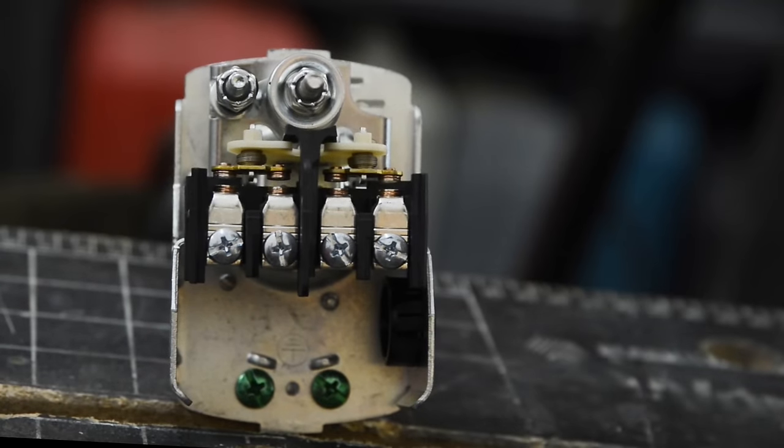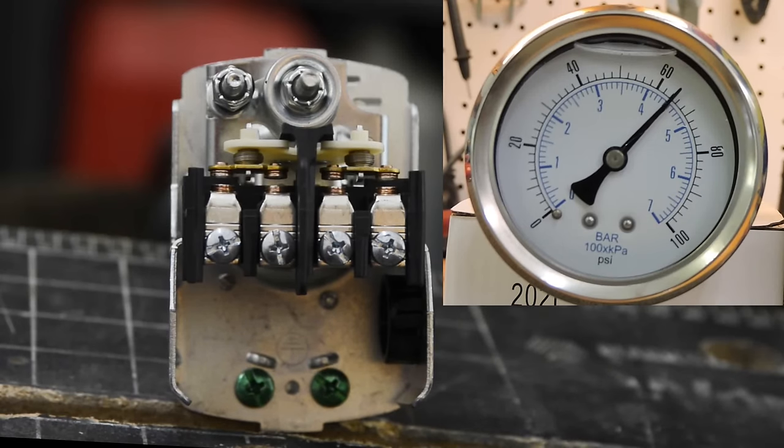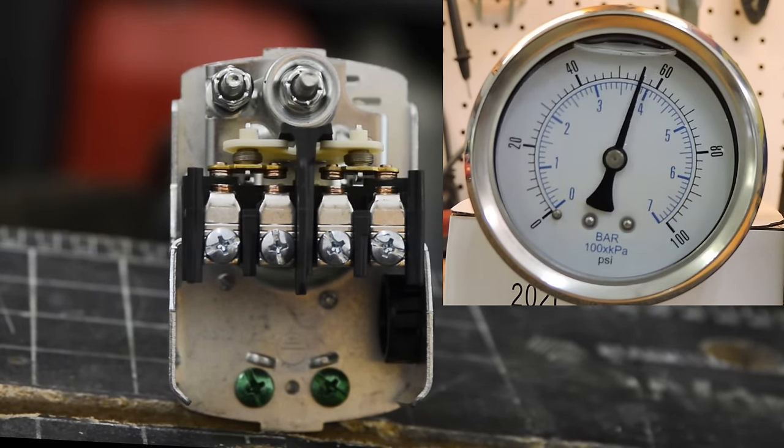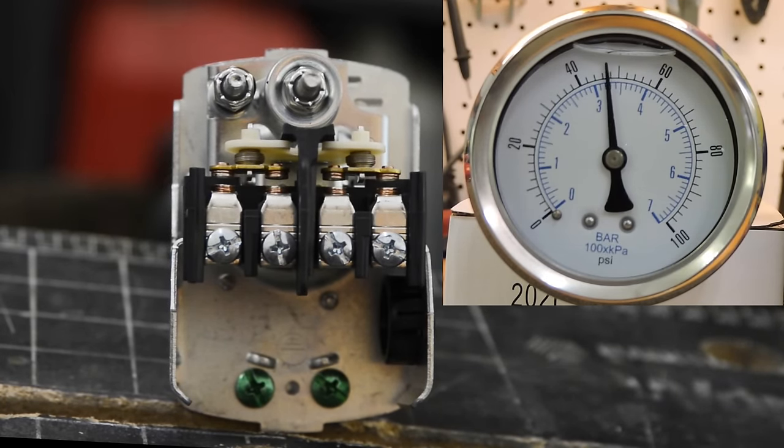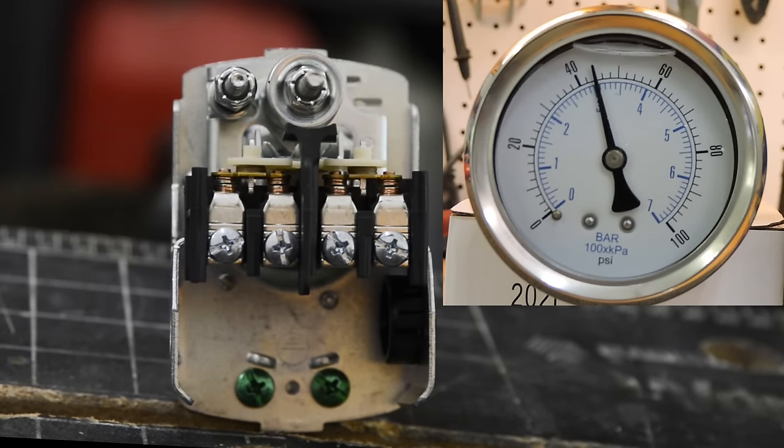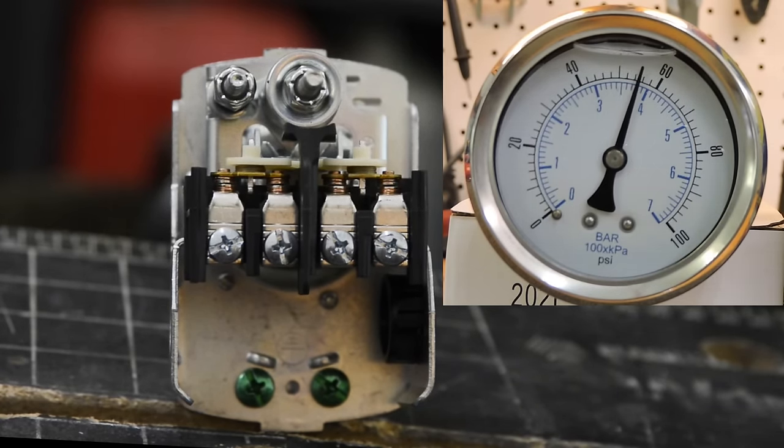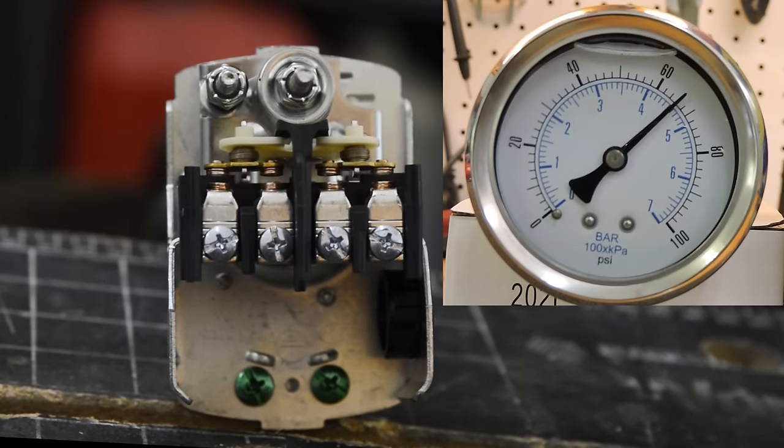We're going to show you the contacts opening. The contacts are open now because the pump will be turned off. The pressure has been satisfied. So as we lose pressure, the contacts will close. And now the pump is running until the pressure is satisfied again. So while the pump is running, the pressure is increasing until it reaches cutoff.